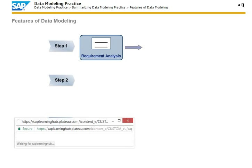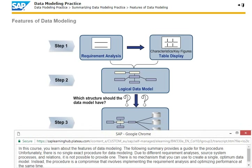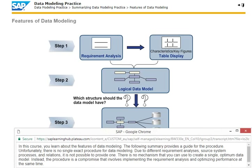In this course, you will learn about the features of data modeling. The following summary provides a guide for the procedure. Unfortunately, there is no single exact procedure for data modeling. Due to different requirement analyses, source system processes and relations, it is not possible to provide one. There is no mechanism that you can use to create a single optimum data model. Instead, the procedure is a compromise that involves implementing the requirement analysis and optimizing performance at the same time.